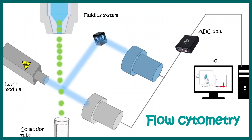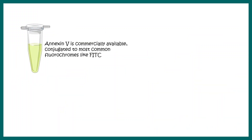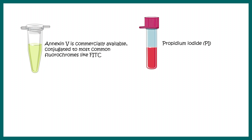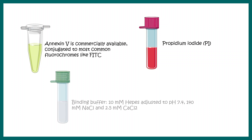With the help of flow cytometry, these cells can be sorted and we can understand and interpret the data. In order to start the assay, you need Annexin-5, which is commercially available, propidium iodide, which is also commercially available, and a particular binding buffer which has calcium chloride in it, because Annexin-5 requires calcium for binding.